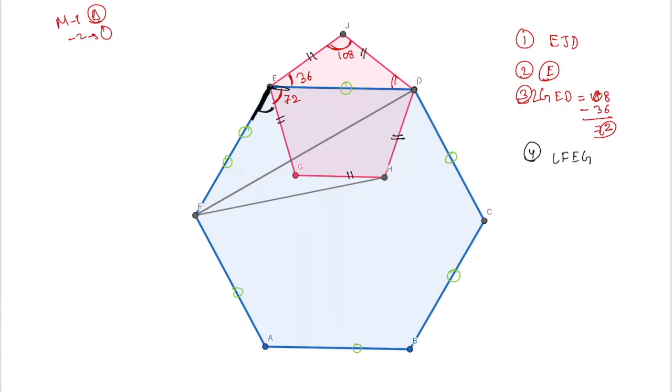This angle is 120 degrees, we have 72 degrees. So the remaining part is 120 minus 72, which is 48 degrees. So we can say this angle is 48 degrees.